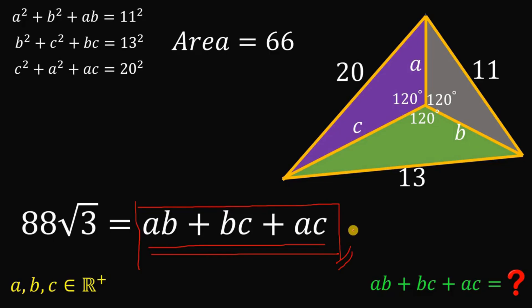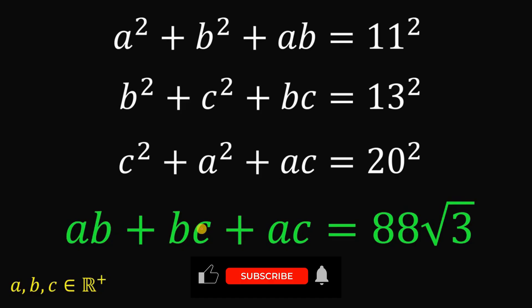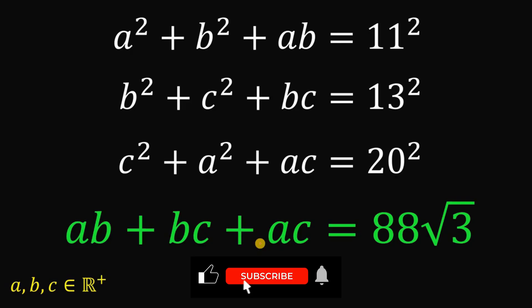So our answer to this question is AB plus BC plus AC equals 88 times the square root of 3. This geometry approach is valid because A, B, and C are side lengths and must be positive real numbers, which matches the given condition. If you solve this using algebra, please comment your solution in the comment section below — I would love to read it. And as always, we are done. Thank you.